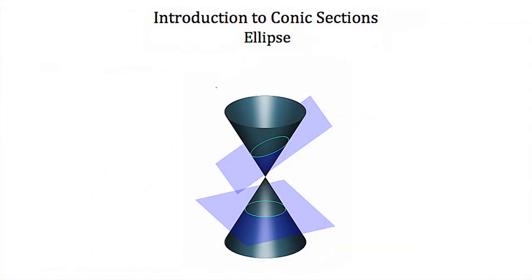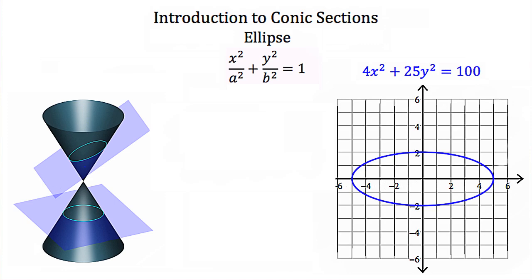The next conic section we're going to talk about is the ellipse. Imagine that we took the plane we made our circle with and tilted it up a little bit, so we cut the cone at an angle. If we were looking straight on our plane and that plane cut our cone at an angle, then what we'd be looking at where these two shapes intersect would look like a stretched circle, or an ellipse. If my plane is cutting my cone at an angle and I'm looking down at my plane, I see the shape of an ellipse, and I can draw a coordinate axis on it.